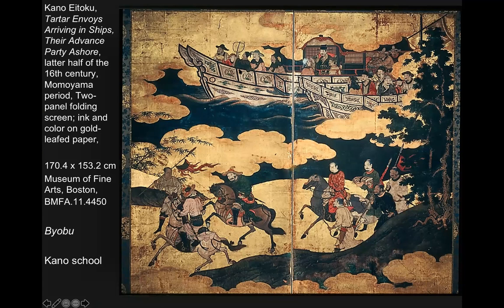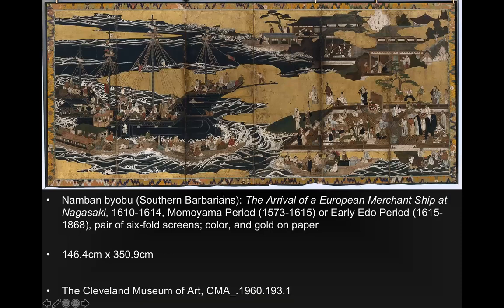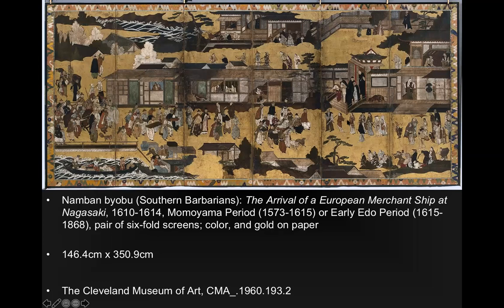Some of these byobos show everyday life. There's one called Tartar Envoys — an outdated name for Mongols — arriving on ships with their advance party ashore. The way the Japanese would often treat foreigners is not so well, but in this one they are treated relatively well. Foreigners from the West, whom they called Nanban, meaning 'southern barbarians,' were named that because the Portuguese originally came from the south and landed at Nagasaki. The Japanese were fascinated by the technology the Portuguese had, though they didn't quite have the conventions to portray Westerners accurately. Eventually in the Edo period, the docks at Nagasaki were the only places where Japanese and Europeans could interact with each other in very limited ways.